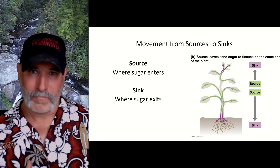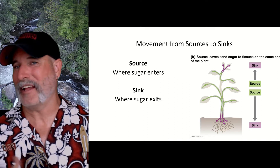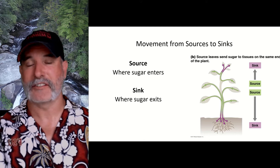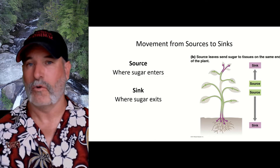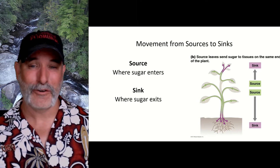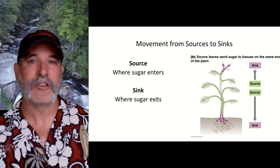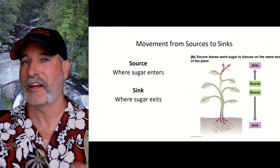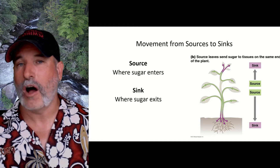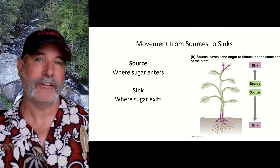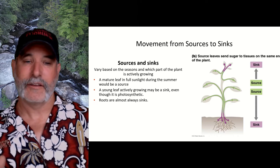In your phloem, it's going to move photosynthates — the stuff the plant is making — from where it's making it, which is the source, to where it's needed, the sink. A root is almost always going to be a sink. If it's not photosynthetic and it's growing, it needs energy. Young branches with new leaves may not be fully photosynthetic, so rapidly growing leaves and limbs can also be a sink. Your mature leaves in full sunlight doing lots of photosynthesis — that would be a source.